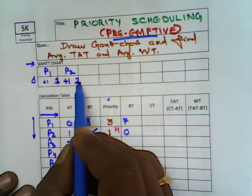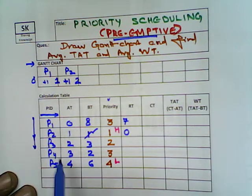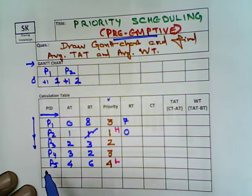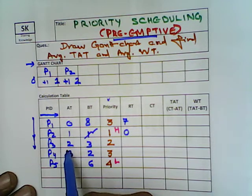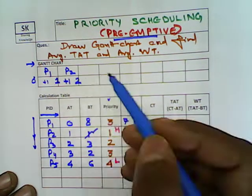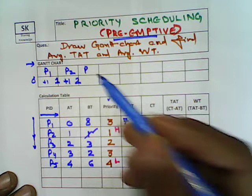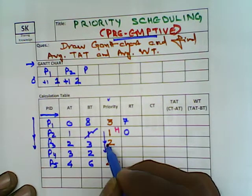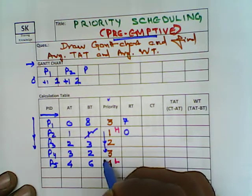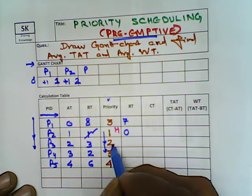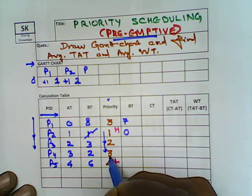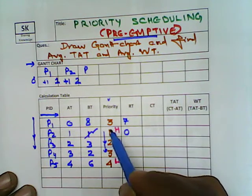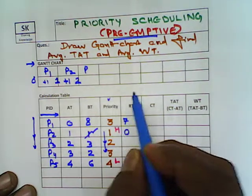At time 2, P3 has arrived in the ready queue. We go to P3 because after priority 1 (P2) the next priority is 2 (P3), then 3, then 4 — that is the priority order. After P1 the next priority is P2, after P2 the next priority is P3, after P3 the next is P4, and after P4 the next is P5.